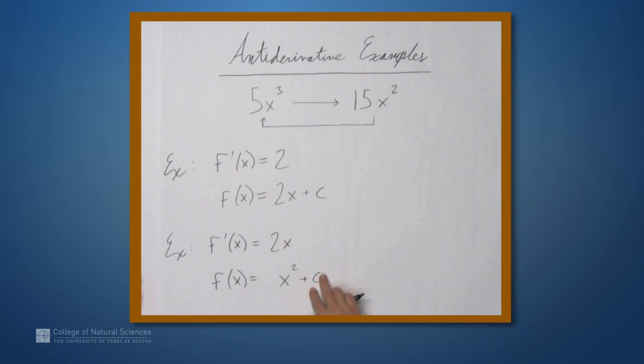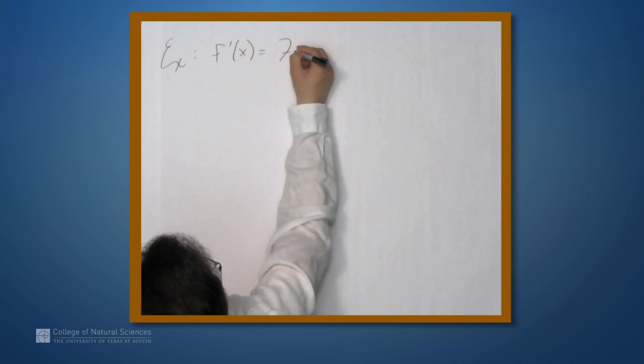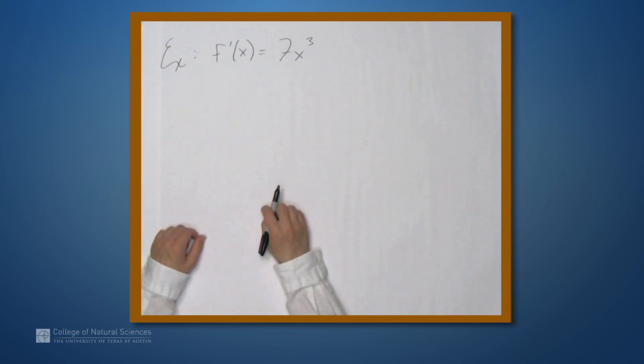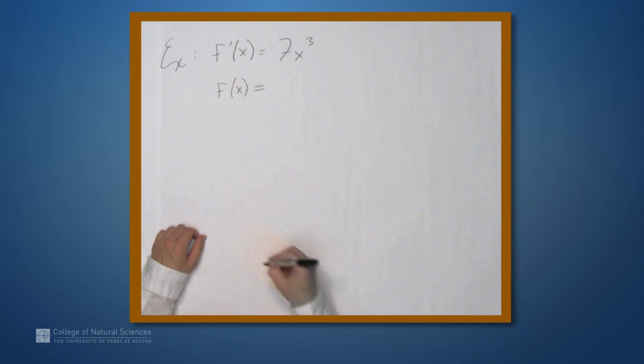Let's look at another example. So let's now suppose that f' is 7x³. So the coefficients here aren't going to work out quite as nicely. But we can still figure out what f must be.